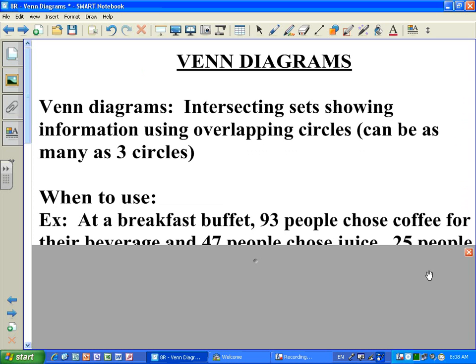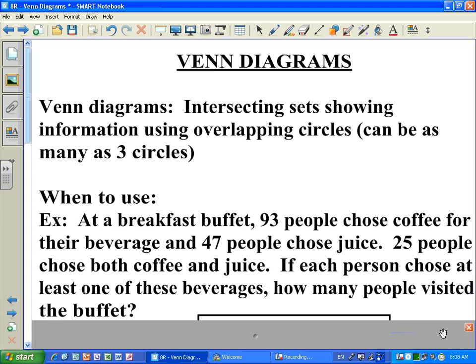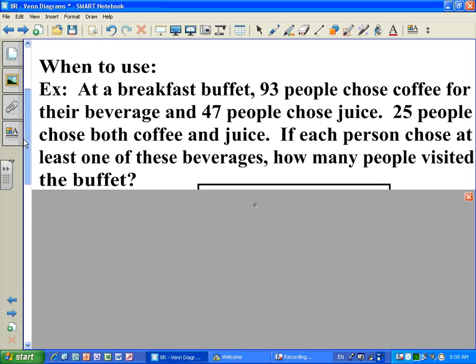Here's a typical word problem involving Venn diagrams. At a breakfast buffet, 93 people chose coffee for their beverage, 47 people chose juice, 25 people chose both coffee and juice. If each person chose at least one of these beverages, how many people visited the buffet?